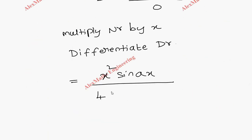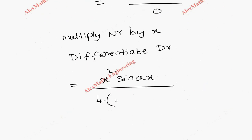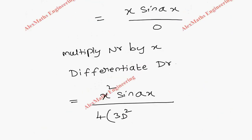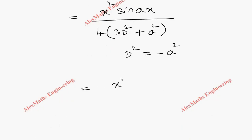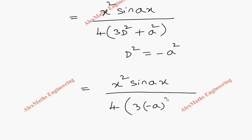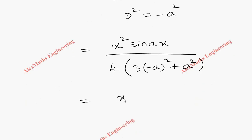Differentiating: the 4 remains, D³ differentiates to 3D², then plus a²·D differentiates to a². Now D² is replaced by −a², so the denominator becomes 4·(3·(−a²) + a²) = 4·(−3a² + a²) = 4·(−2a²) = −8a².